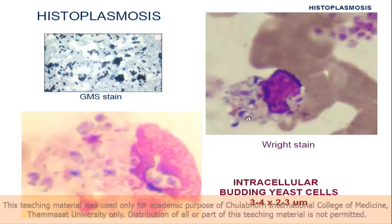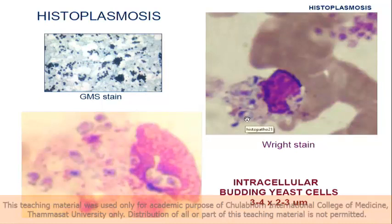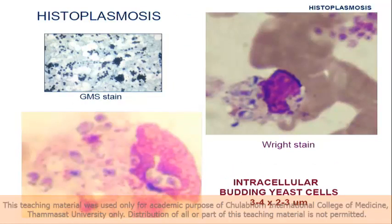With Wright stain, it becomes like a seal — very typical, like this one. The size also needs to be noted.